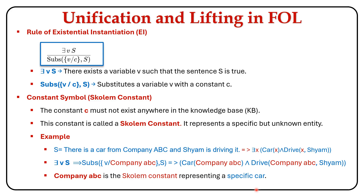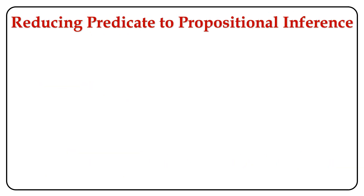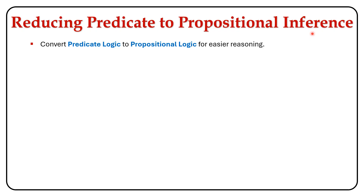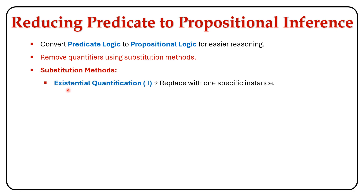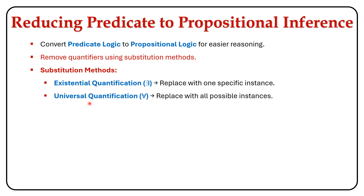Now let's learn about reducing predicate to propositional inference. It is mainly used for making reasoning easier. It removes quantifiers using substitution methods. Using the existential quantifier, it replaces with one specific instance. Using the universal quantifier — for all — it replaces with all possible instances.